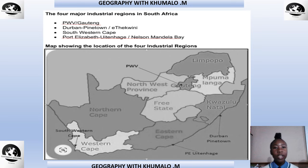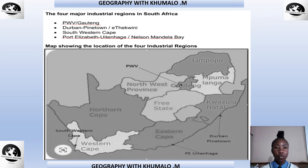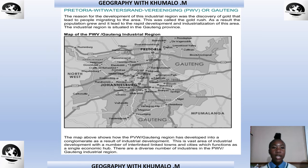Let's look at the four major industrial regions in South Africa. Although we'll be dealing with the PWV and Port Elizabeth Winterhaven, we also have the Durban-Pinetown and the Southwestern Cape, but we are not focusing on those. We are doing the PWV Gauteng and the Port Elizabeth Winterhaven, also known as Nelson Mandela Bay.